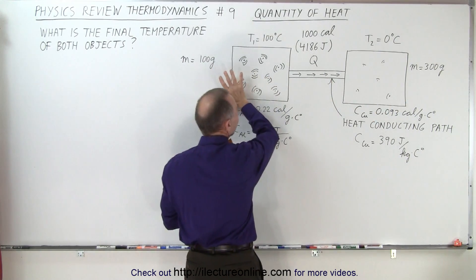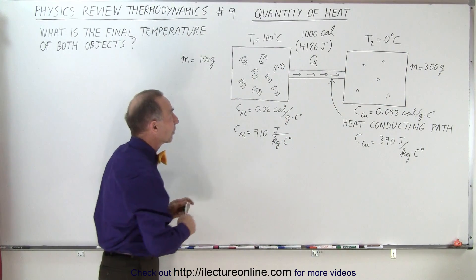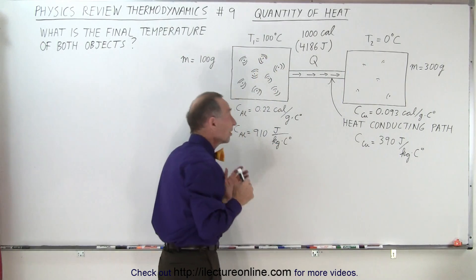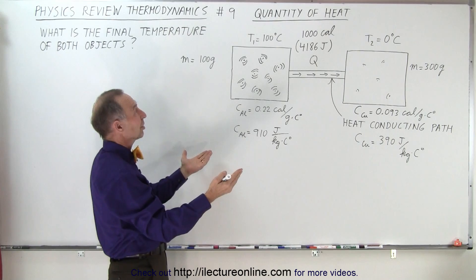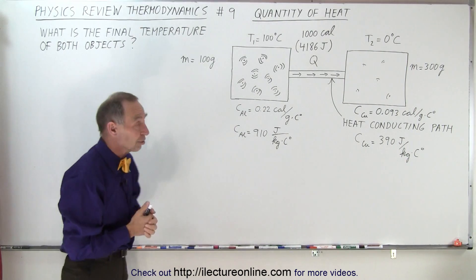We're transferring a thousand calories of heat from the left side to the right side. This one starts at 100 degrees Celsius, this one starts at zero degrees Celsius. The question is, what will be the final temperature of the two objects after that heat is transferred?